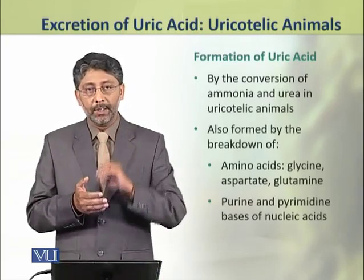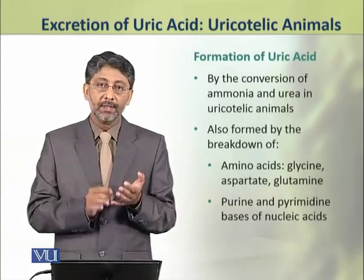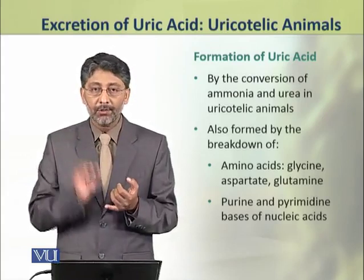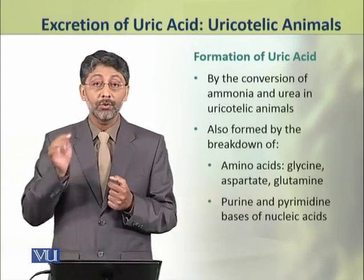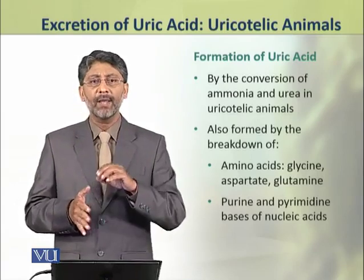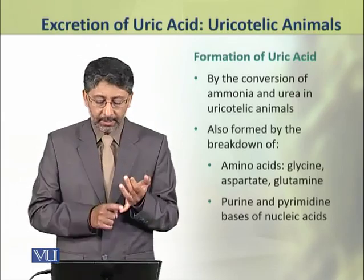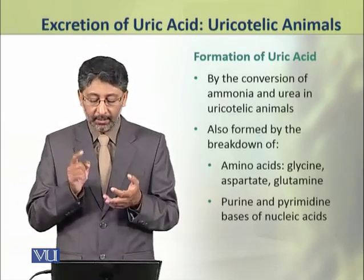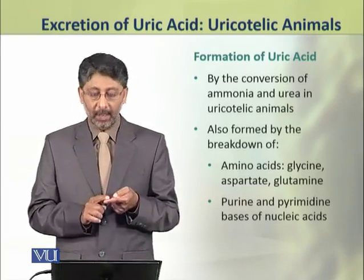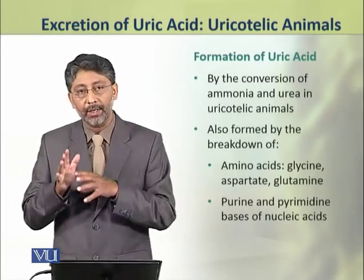Now we shall discuss the formation of uric acid. Uric acid is formed by the conversion of ammonia and urea in uricotelic animals. It is also formed by the breakdown of amino acids glycine, aspartate and glutamine. It is also formed by the metabolism of pyrimidine and purine bases of nucleic acids.